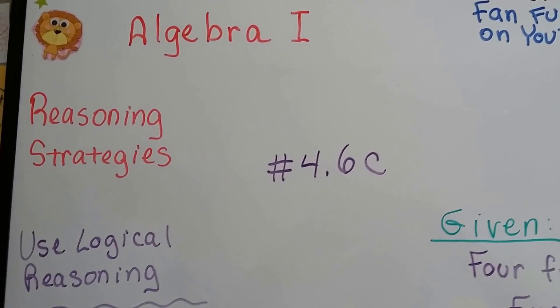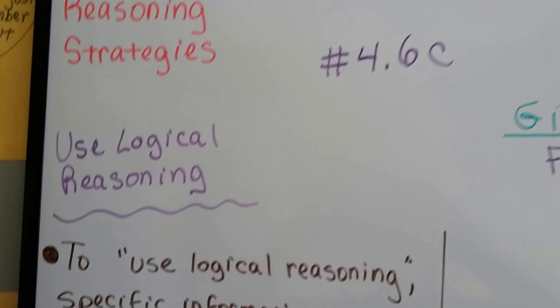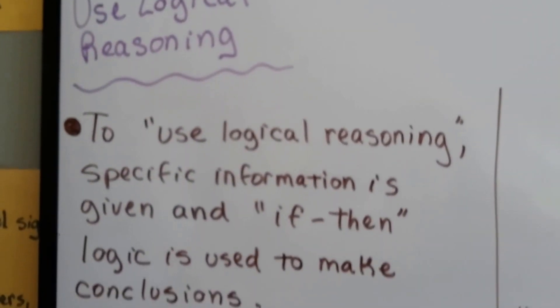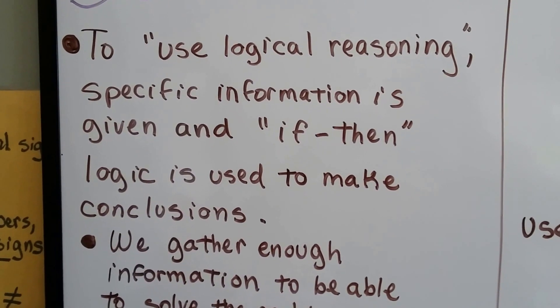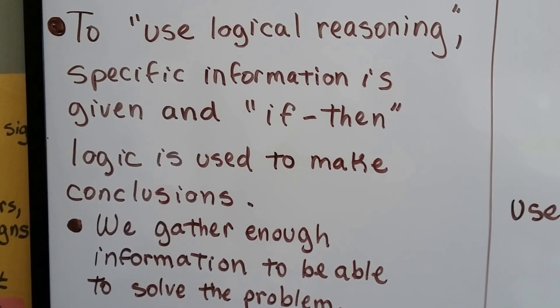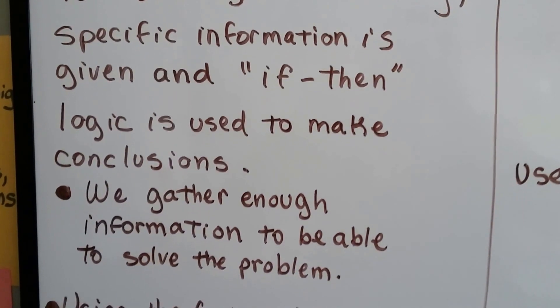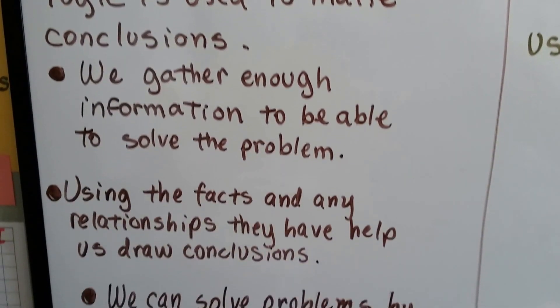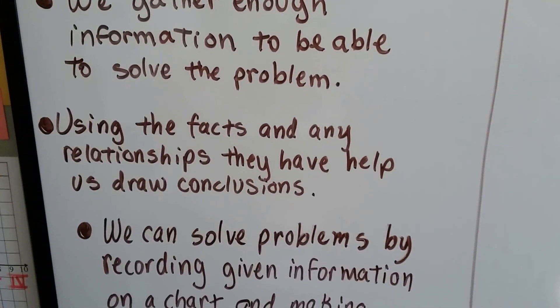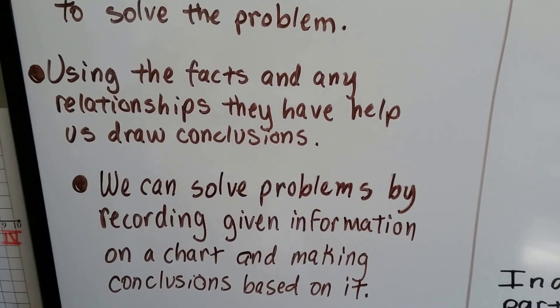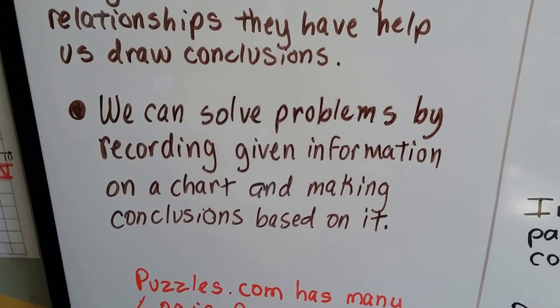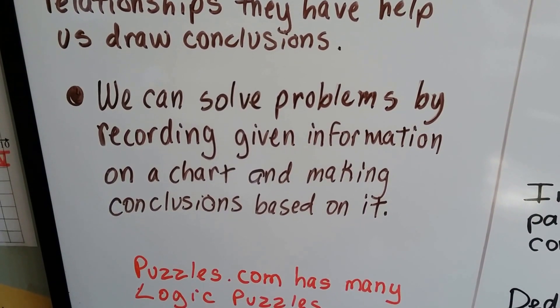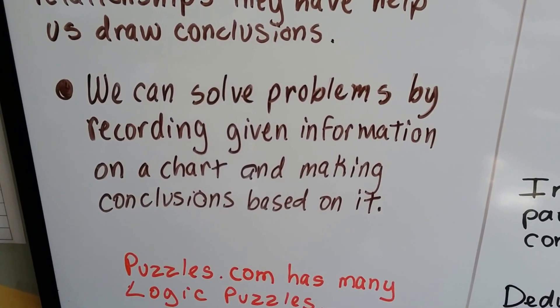Algebra 1 number 4.6c, we're talking about reasoning strategies. We're going to use logical reasoning in this video. To use logical reasoning, specific information is given and if-then logic is used to make conclusions. We gather enough information to be able to solve the problem. Using the facts and any relationships they have help us draw conclusions. We can solve problems by recording given information on a chart and making conclusions based on it.